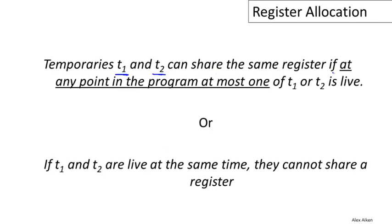If at any point in the program at most one of T1 or T2 is live. The more concise way is that if T1 and T2 are live at the same time, meaning there's some program point where both are live, then they cannot share a register.